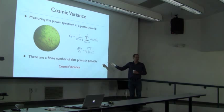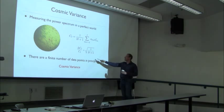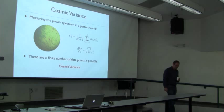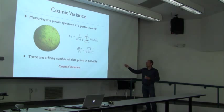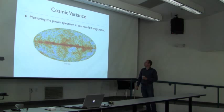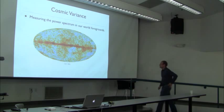The key point is that if I have a single two-dimensional projection, there are a finite number of data points — full stop. I cannot get better precision than this. That's called cosmic variance. There are fundamentally a finite number of data points for a given bin in L. Even in a perfect world there's a limitation on how precisely I can know the power spectrum.